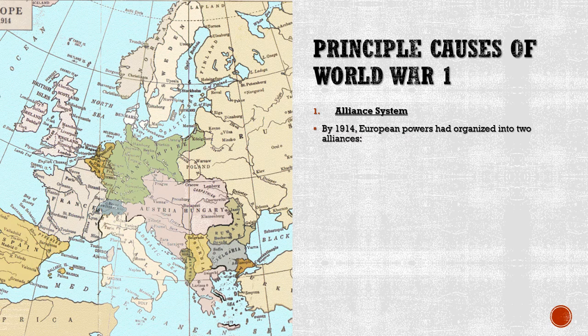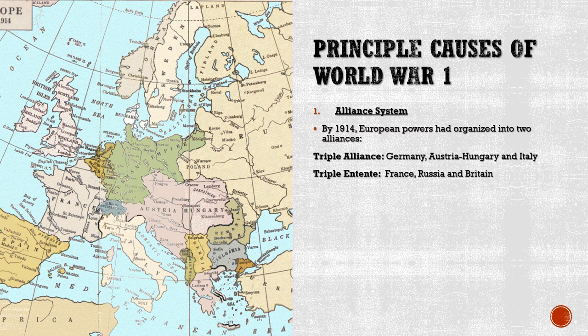One of the main reasons World War One takes place is the alliance system — this is how the assassination spins out of control into a domino effect involving every country in Europe. By 1914, European powers had organized themselves into two major alliances: the Triple Alliance, which included Germany, Austria-Hungary, and Italy, and the Triple Entente, which included France, Russia, and Britain. Note that Italy would actually switch sides shortly after the beginning of the war. When Princip shot the royal family, Austria-Hungary immediately blamed Serbia. Austria-Hungary declared war on Serbia, but Serbia had allied itself with Russia.